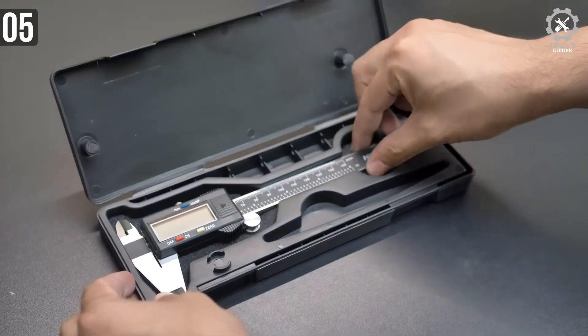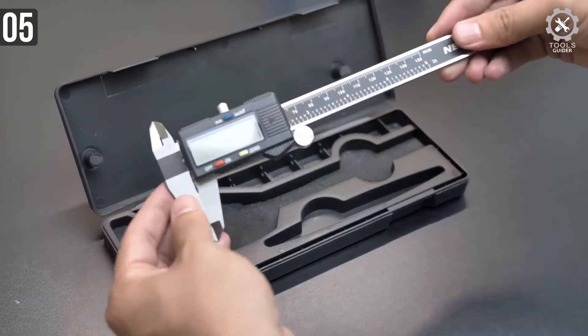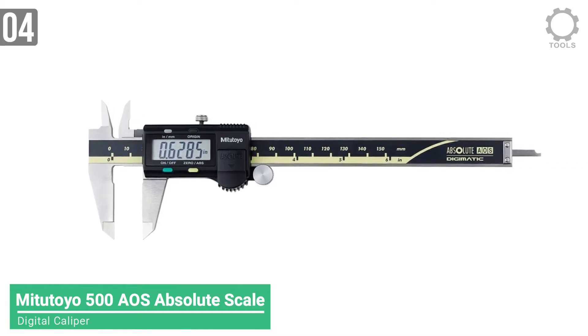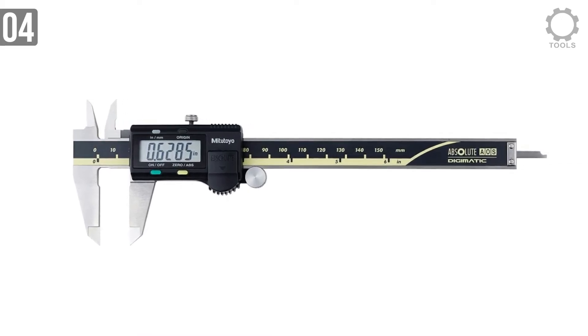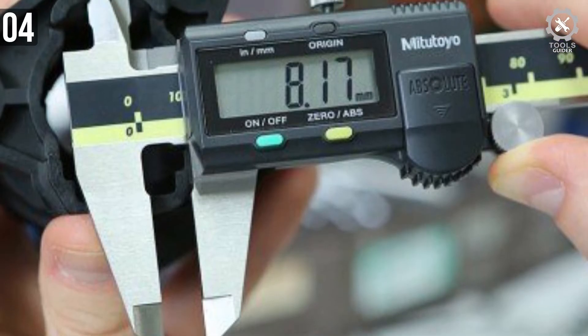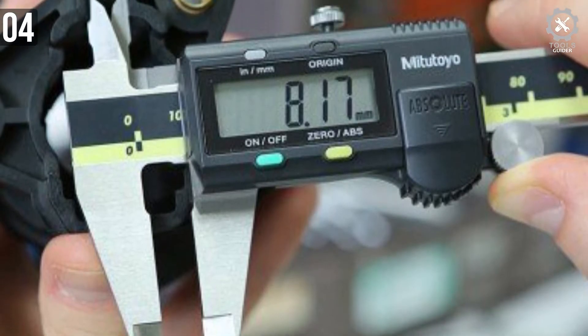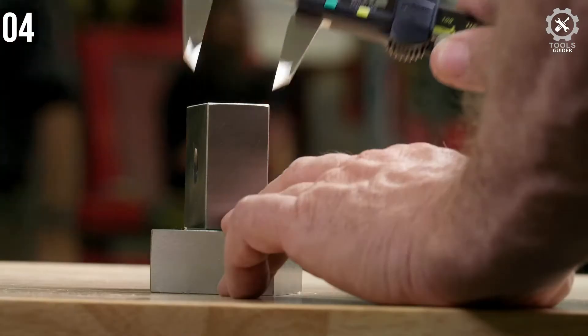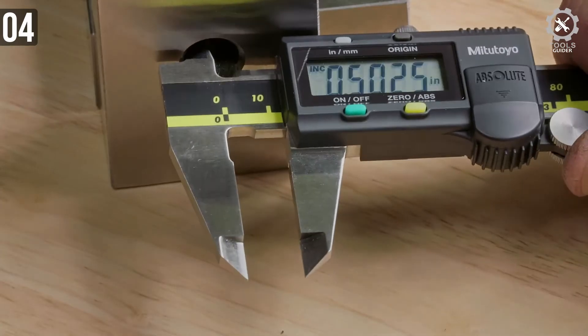They are quite easy to find and very cheap as well. Number 4: Mitutoyo 500AOS Absolute Scale Digital Caliper. Mitutoyo 500AOS is our fourth pick on the list. Mitutoyo is a Japanese brand and their tools are considered as premium tools.